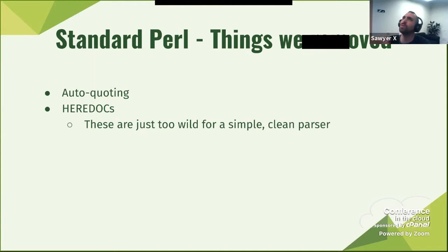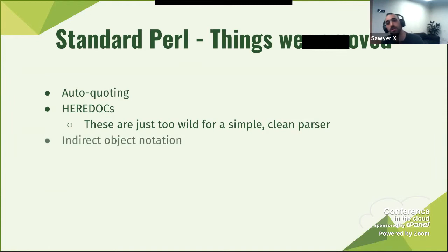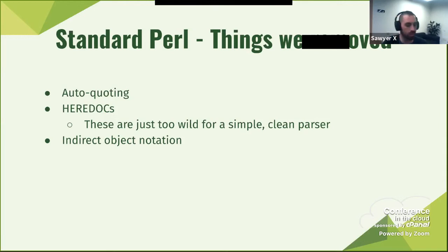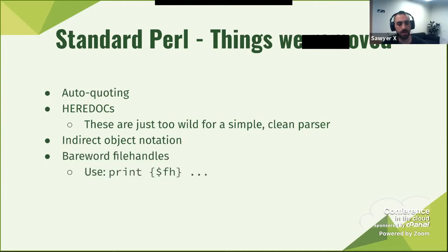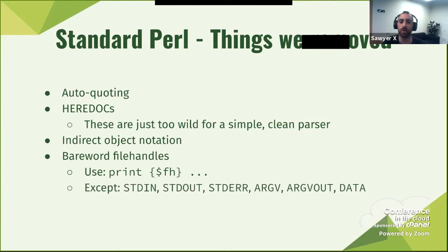I remember one bug we got in Perl because someone was trying to do an eval on a command line with a here-doc within a regex match execution — it was like a tower of 'why were you even trying to?' They came up with an error. Indirect object notation is also removed. Some people like this — recently someone posted about how important indirect object notation is, and I wholeheartedly disagree. Bare-word file handles are also gone, except you can still use 'print' with file handles via braces. The specific bare-word handles like STDOUT and STDERR are still supported.